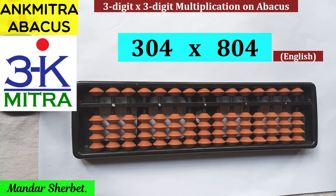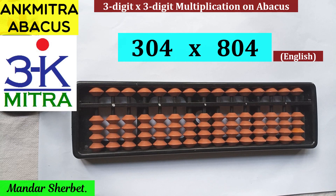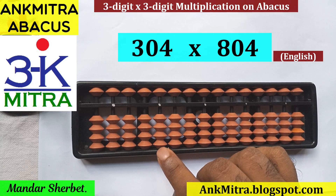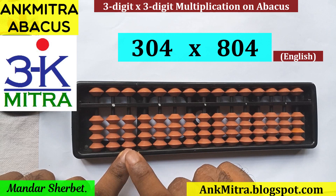Hello everyone. A subscriber requested me to cover a three-digit multiplied by three-digit example where there are zeros in the given numbers. I have considered this example: 304 multiplied by 804. Both numbers have a zero in the middle. Since it's a three-digit number multiplied by a three-digit number, we'll start from the sixth rod. This is the first rod, second, third, fourth, fifth, and sixth. Let's start our calculation from the sixth rod.